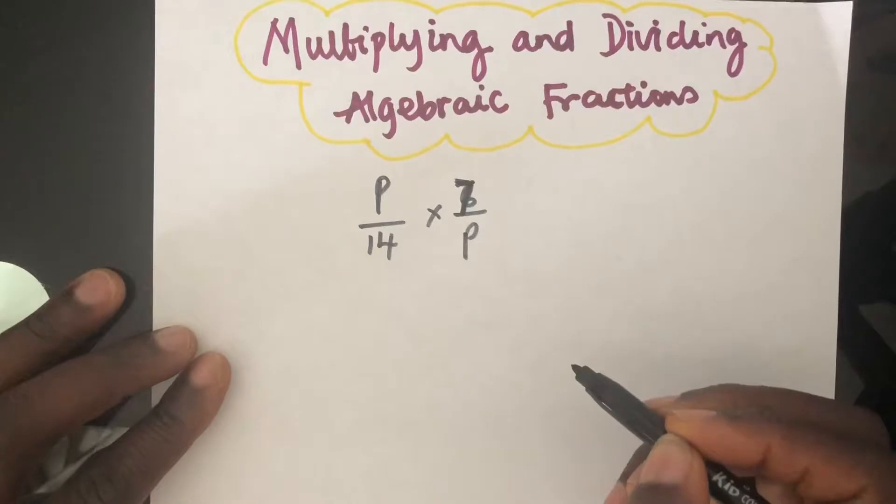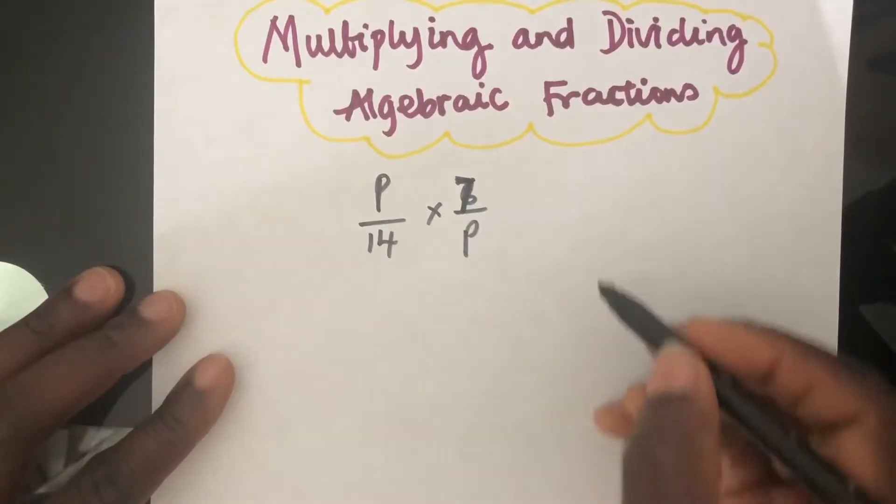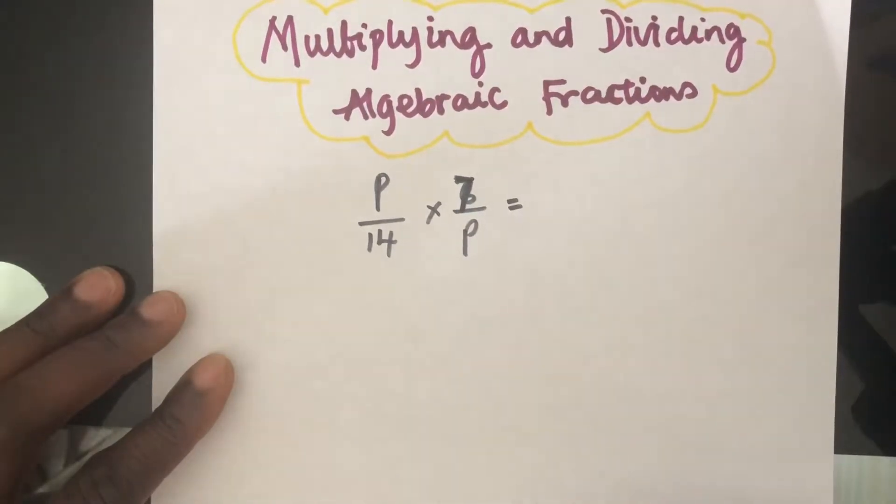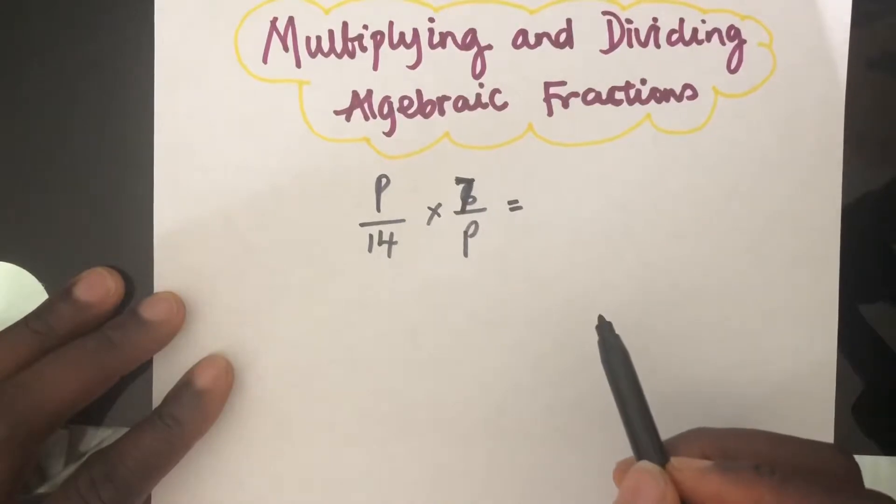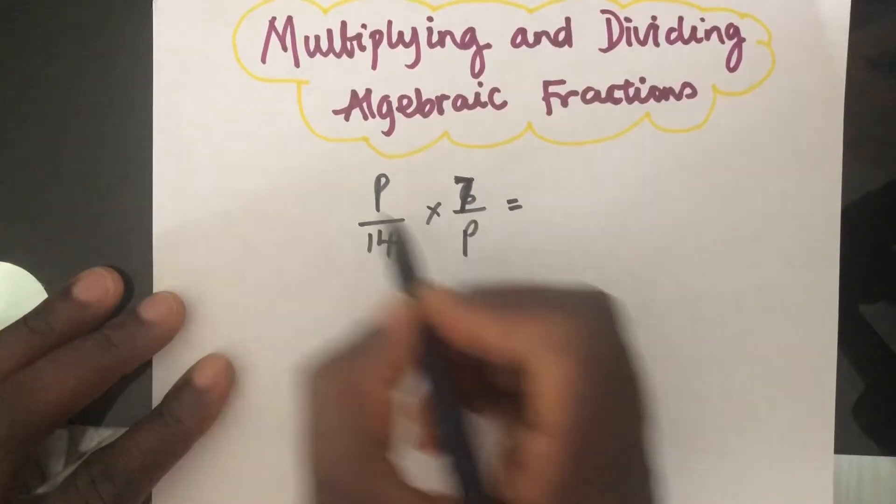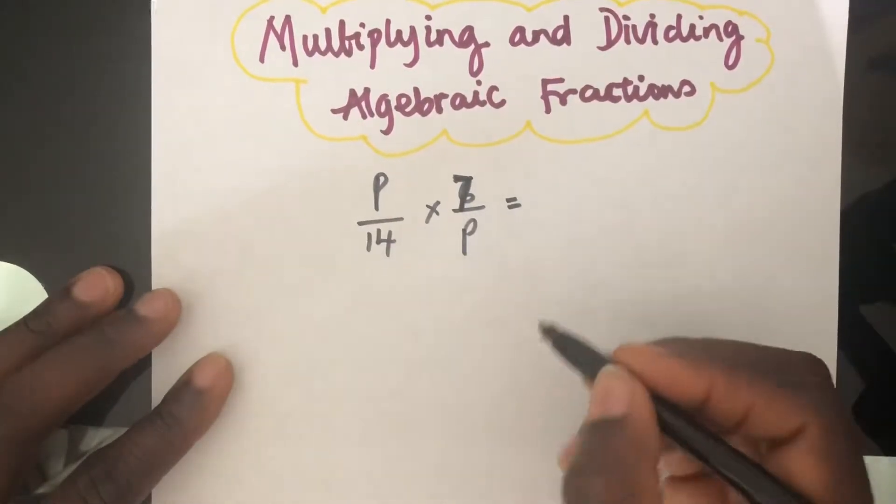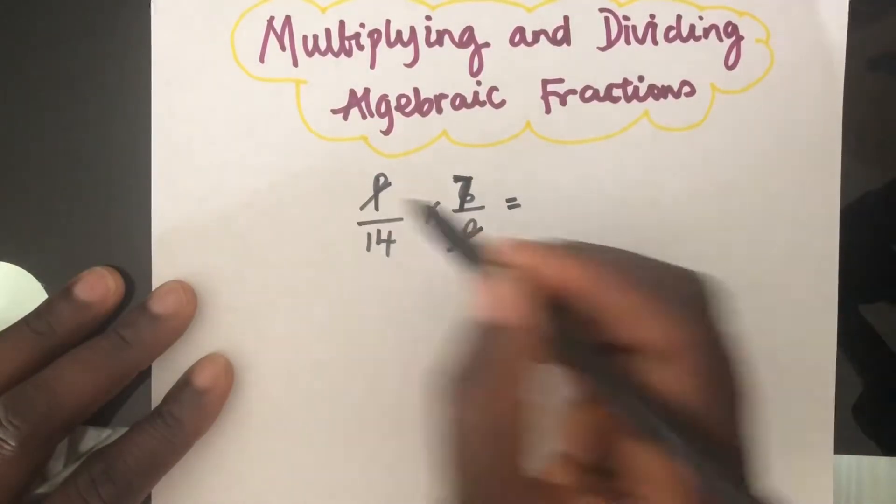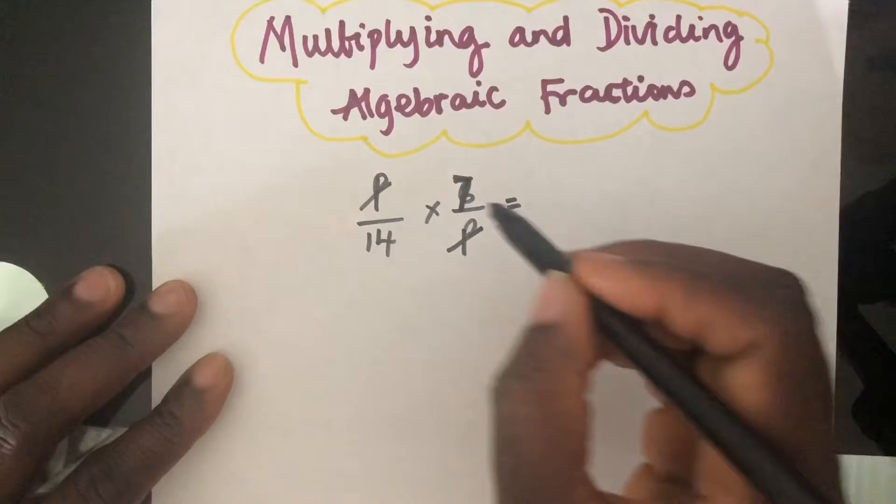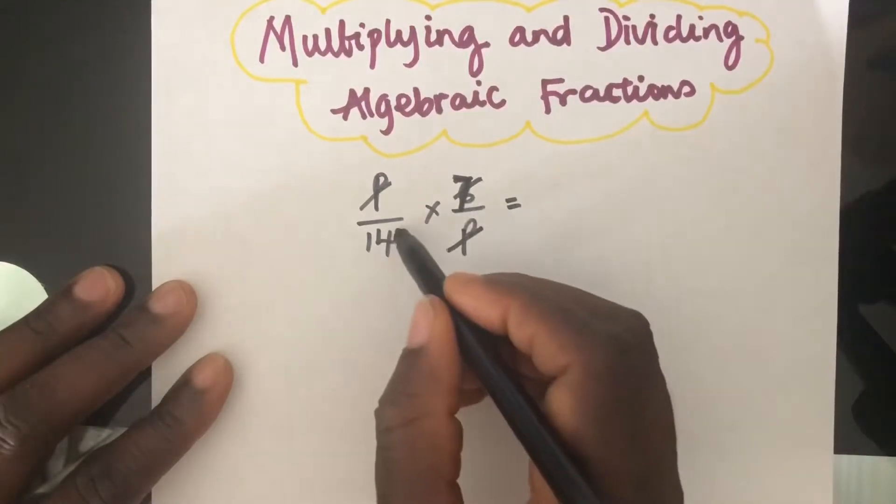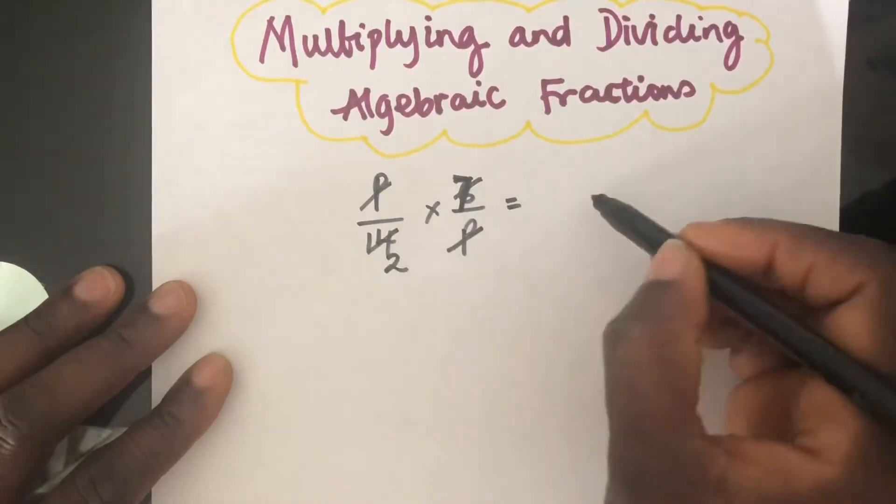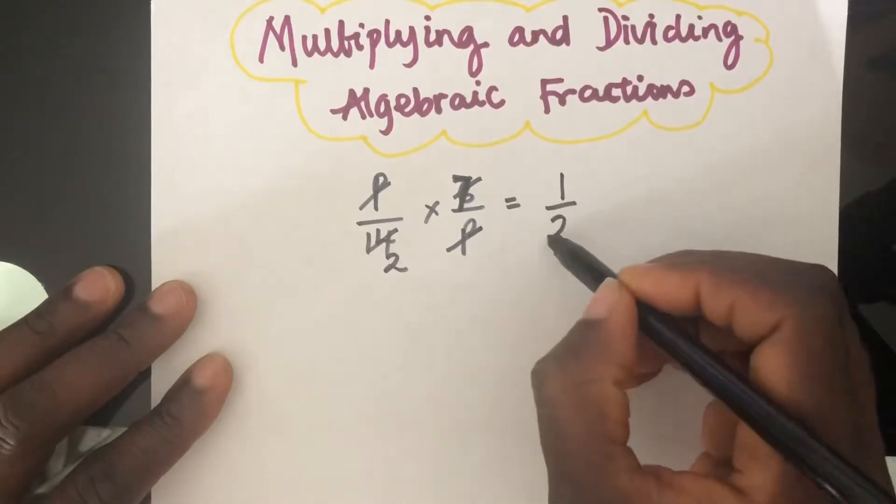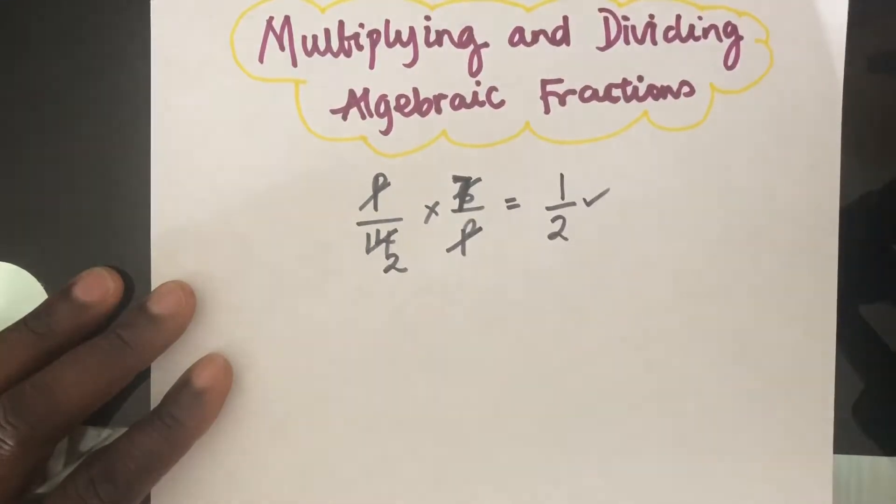I'm going to use the idea of cancelling down to try multiplying the top and bottom numbers. But in this case, clearly I'm seeing that P can cancel P. So if I use the idea of cancelling down, then this P can cancel this P. And 7 can go into 14 two times. So I would have 1 over 2 left as my answer.